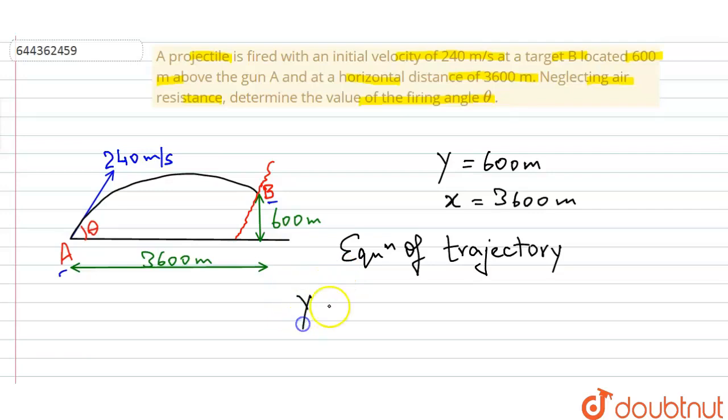Y equals X tan theta—this theta we have to find out—minus GX squared over 2U squared cos squared theta.